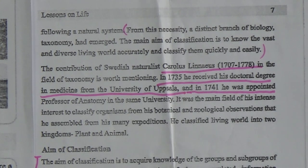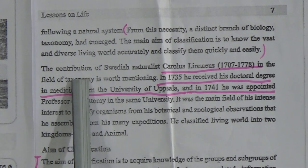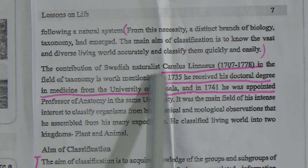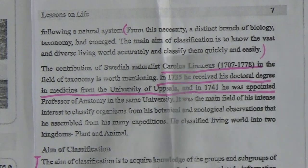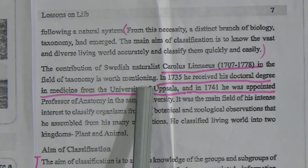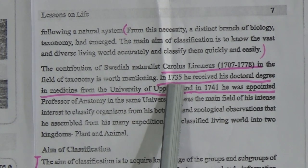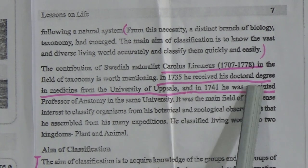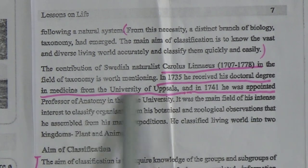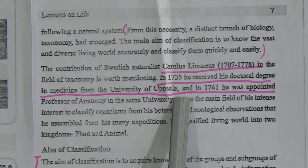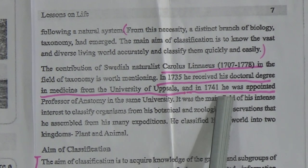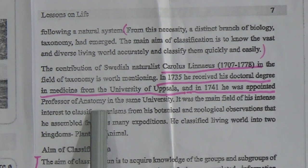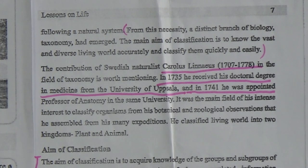Who is the father of classification? The contribution of Swedish naturalist Carolus Linnaeus in the field of taxonomy is worth mentioning. In 1735, he received his doctoral degree in medicine from the University of Uppsala, and in 1741, he was appointed professor of anatomy in the same university. So, Carolus Linnaeus is called the father of classification.